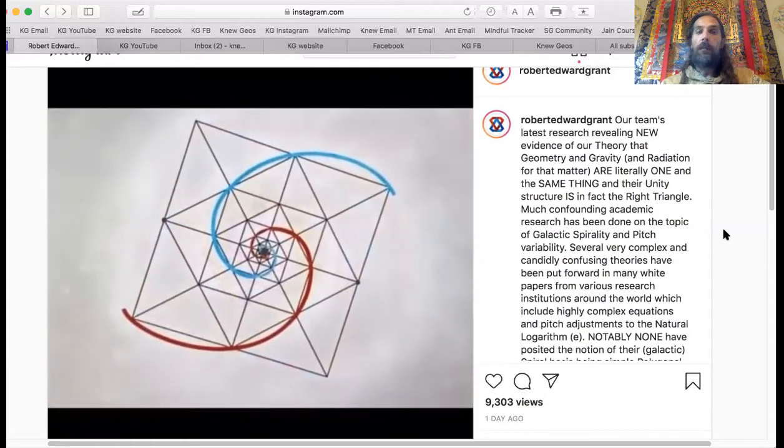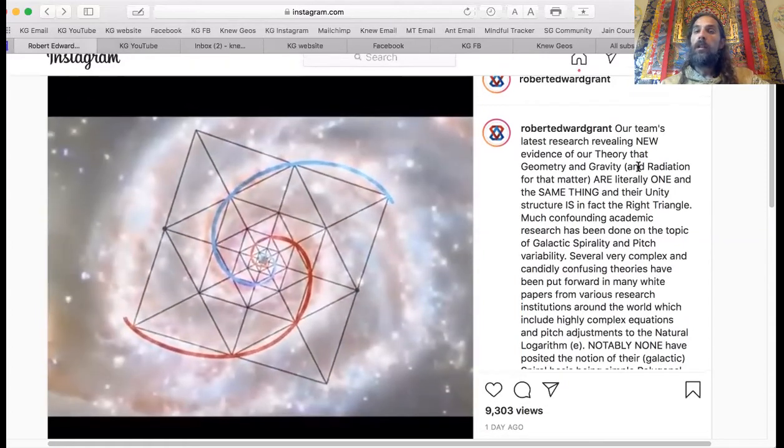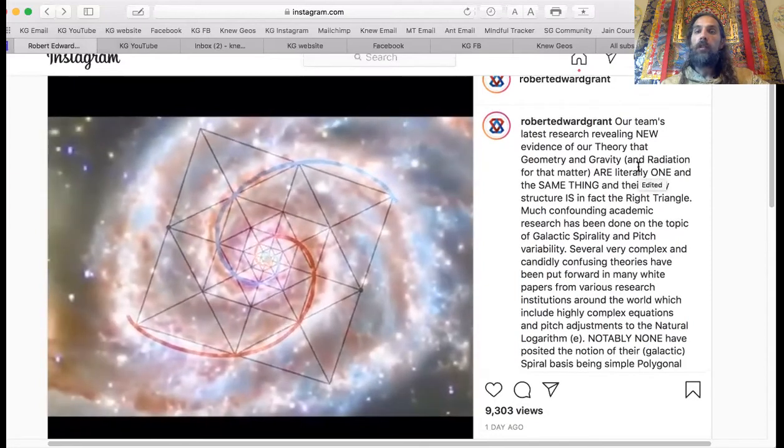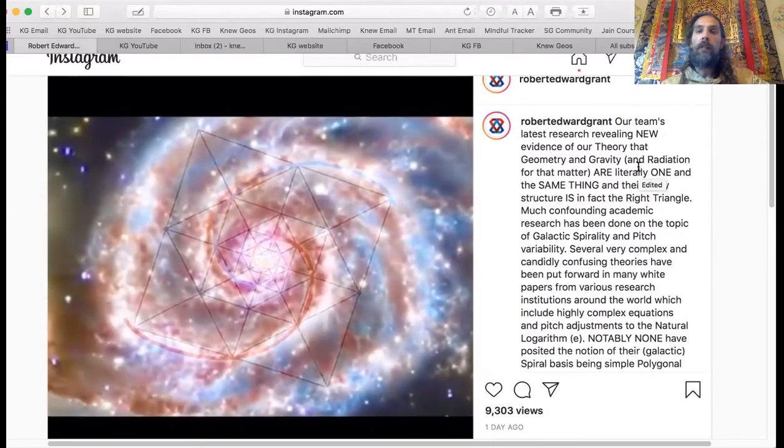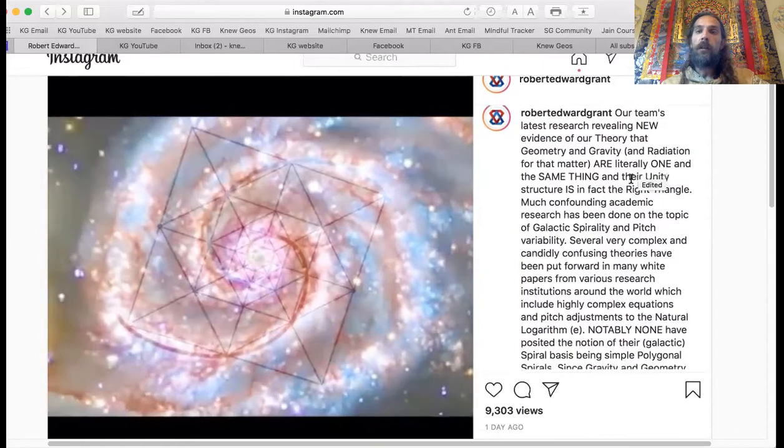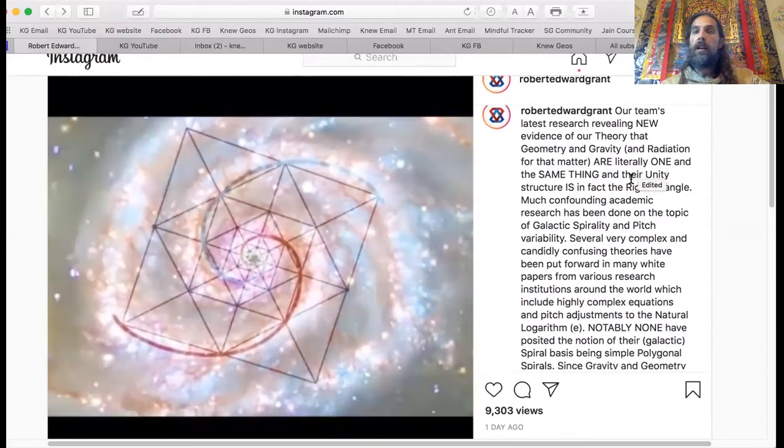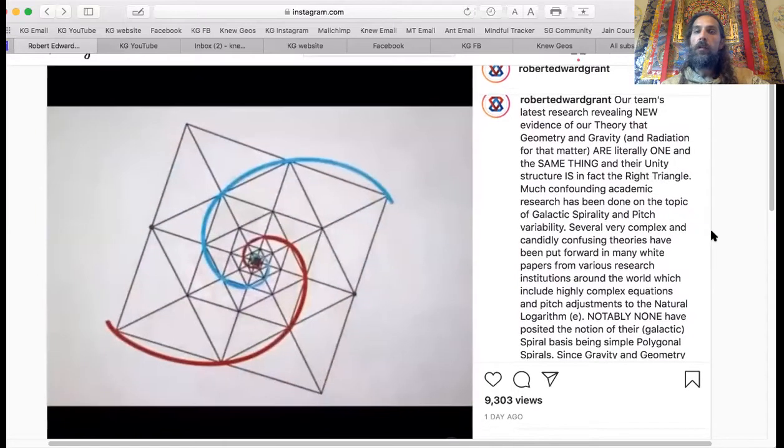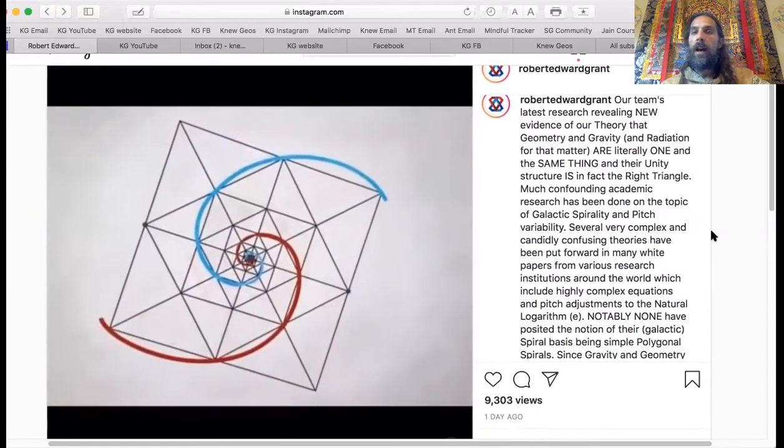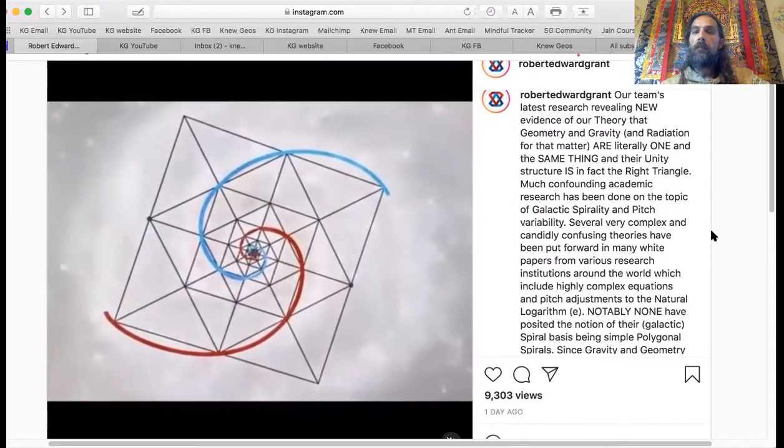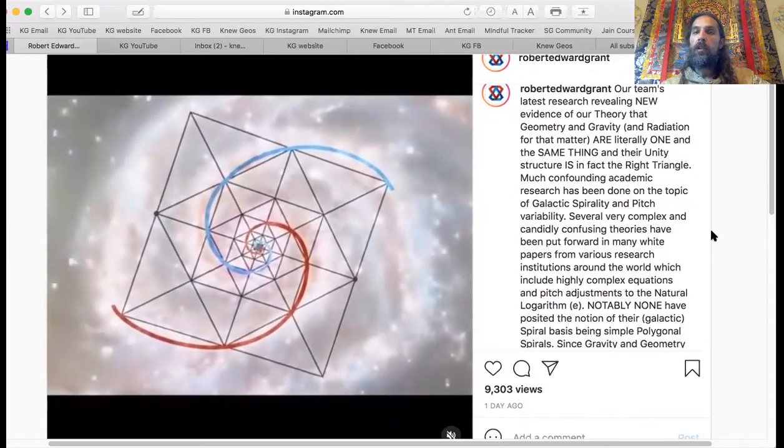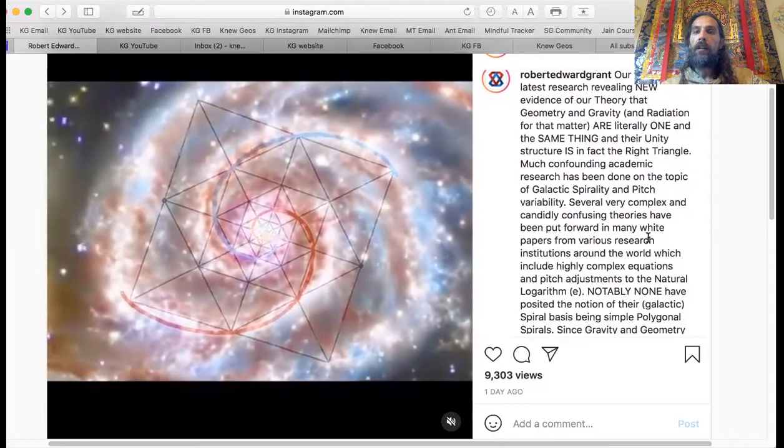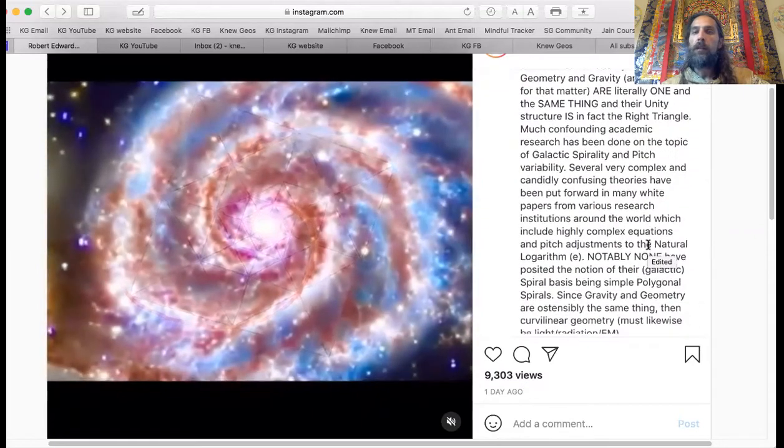Here's what he says: our team's latest research revealing new evidence of our theory that geometry and gravity and radiation for that matter are literally one in the same thing, and their unity structure is in fact the right triangle. Much confounding academic research has been done on the topic of galactic spirality and pitch variability.